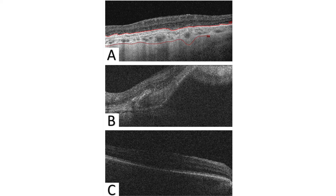Other artifacts that can occur on OCT: because of noise, reflectivity changes, or media opacities, segmentation can be wrong. If the image is outside the two-millimeter imaging range of the OCT, it gets inverted in the image. Vitreous opacities can also create shadowing artifacts.